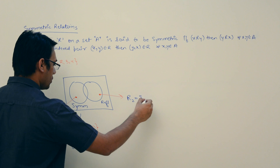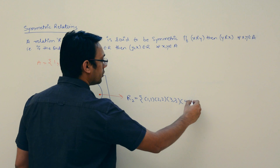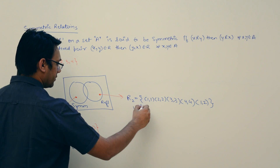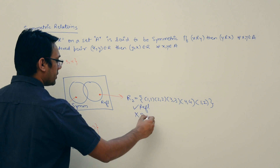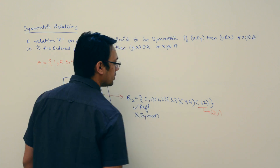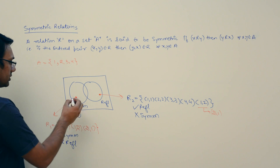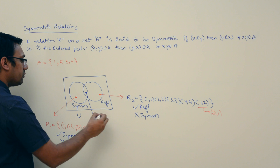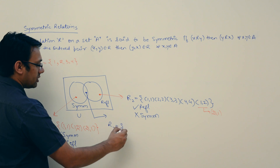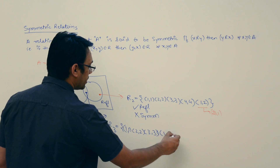For a relation that is reflexive but not symmetric, consider R2 = {(1,1), (2,2), (3,3), (4,4), (1,2)}. This relation is reflexive but not symmetric, because it has (1,2) but not (2,1). For a relation that is both reflexive and symmetric, consider R3 = {(1,1), (2,2), (3,3), (4,4)} — it has only diagonal pairs, so it is reflexive as well as symmetric.